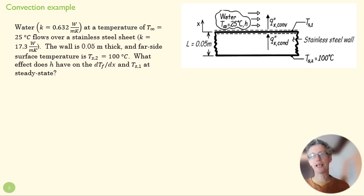The purpose of this example is to take a pretty straightforward convection situation and figure out what the convection coefficient h has to do with the gradient of temperature and surface temperature.